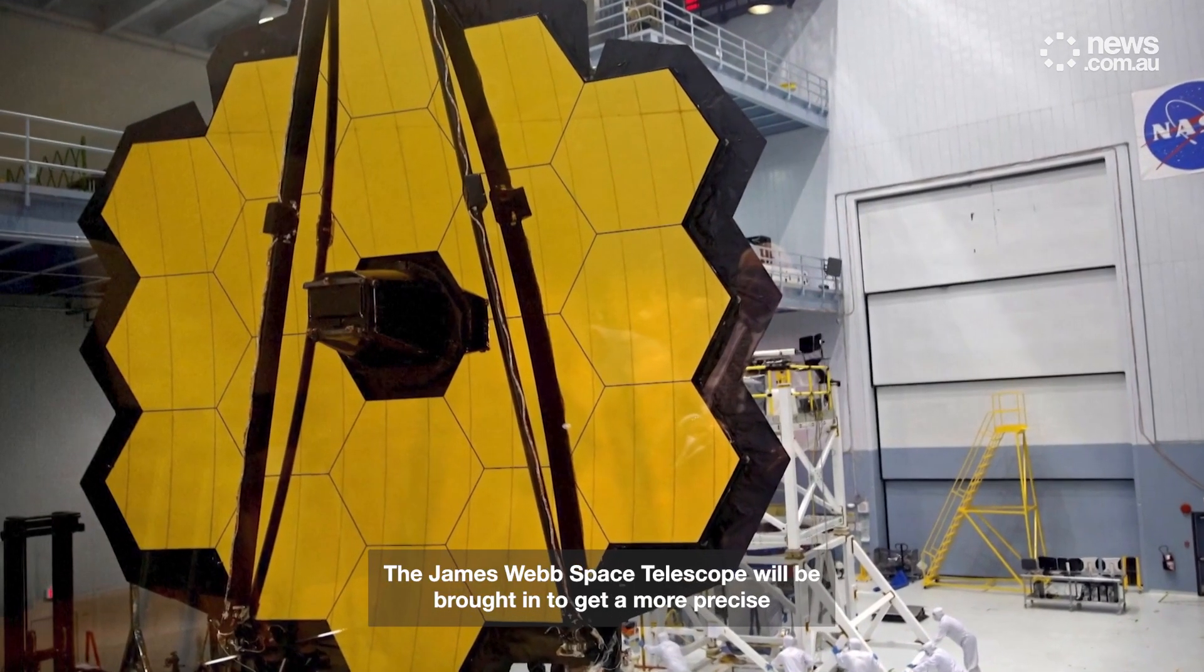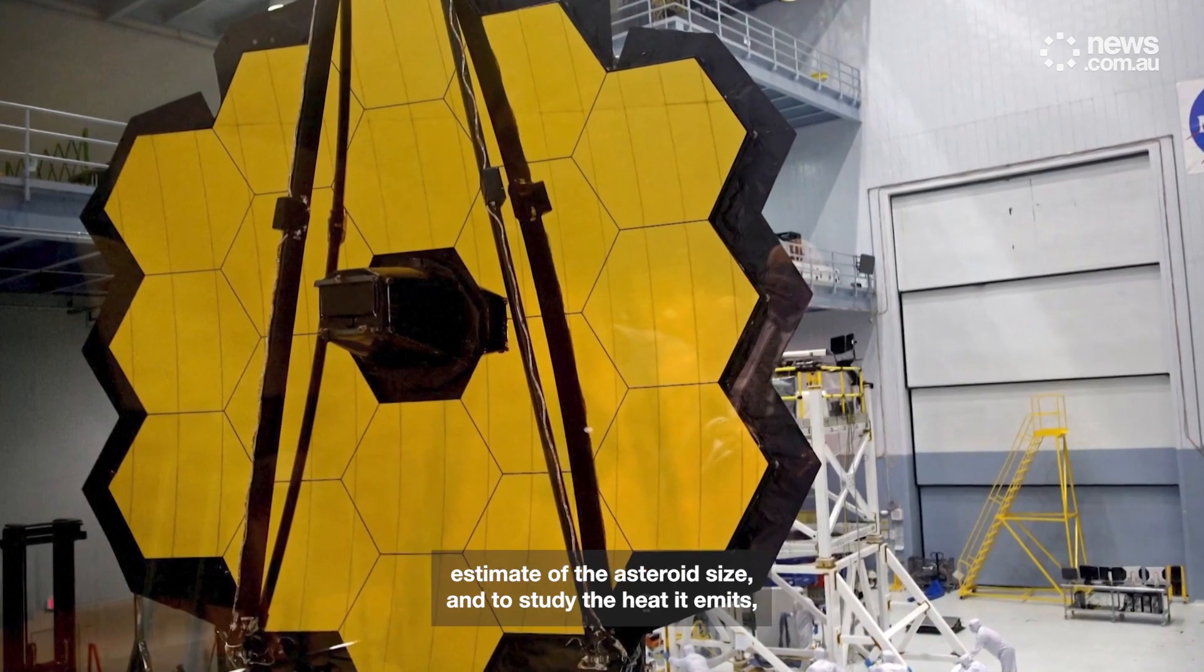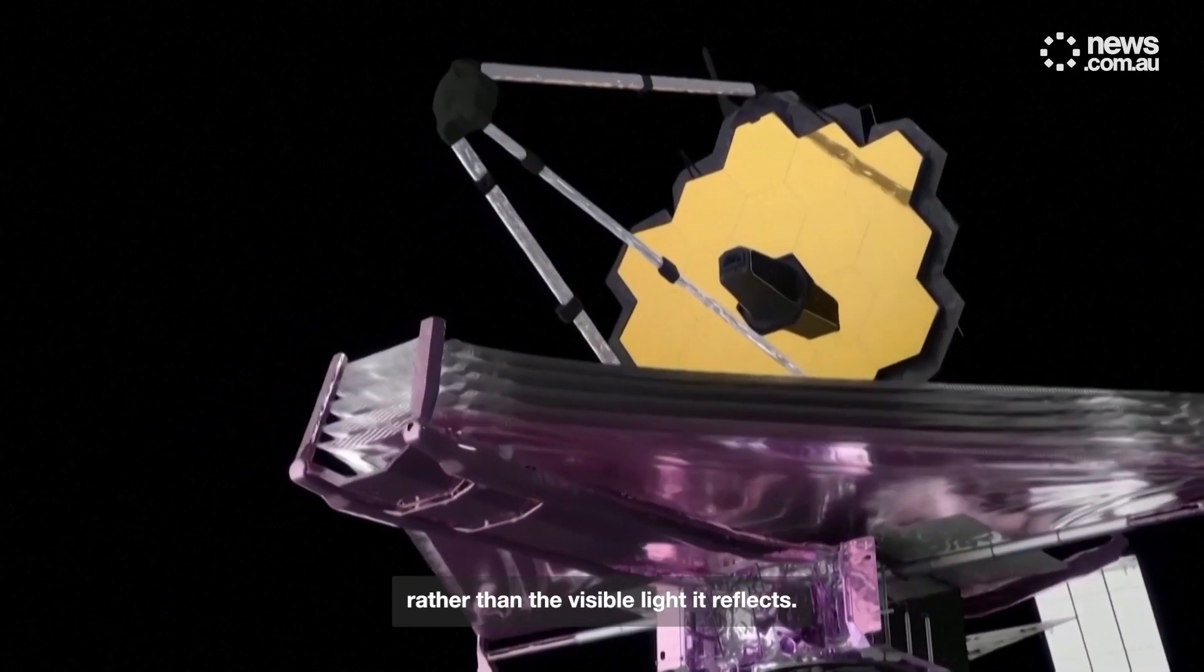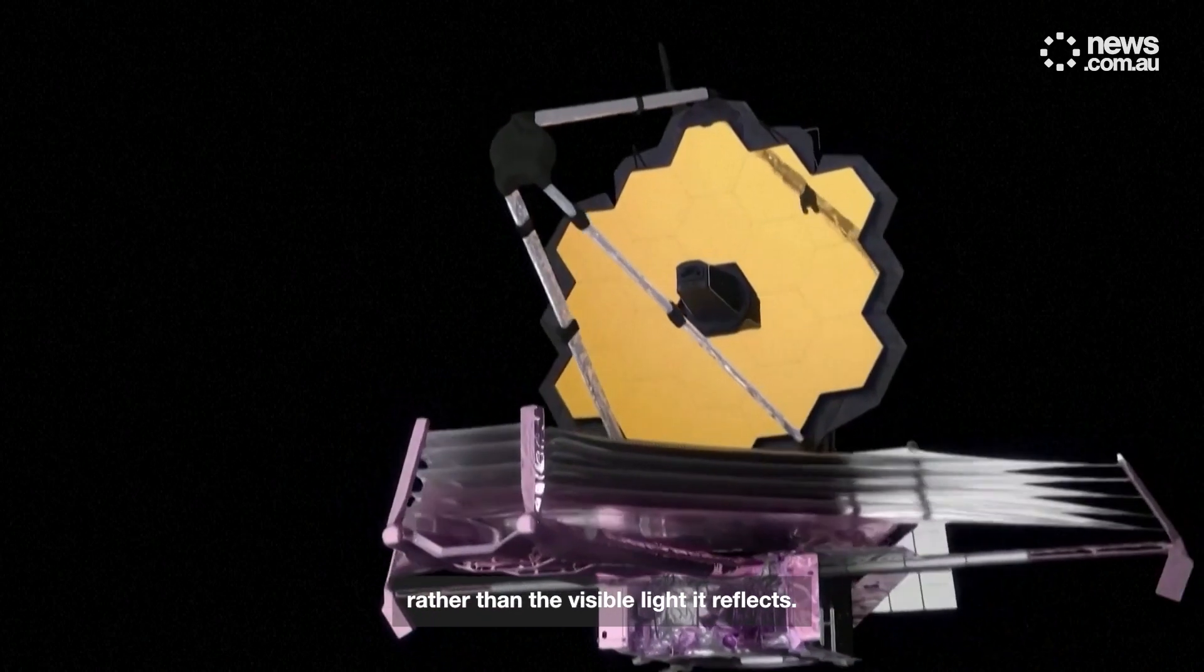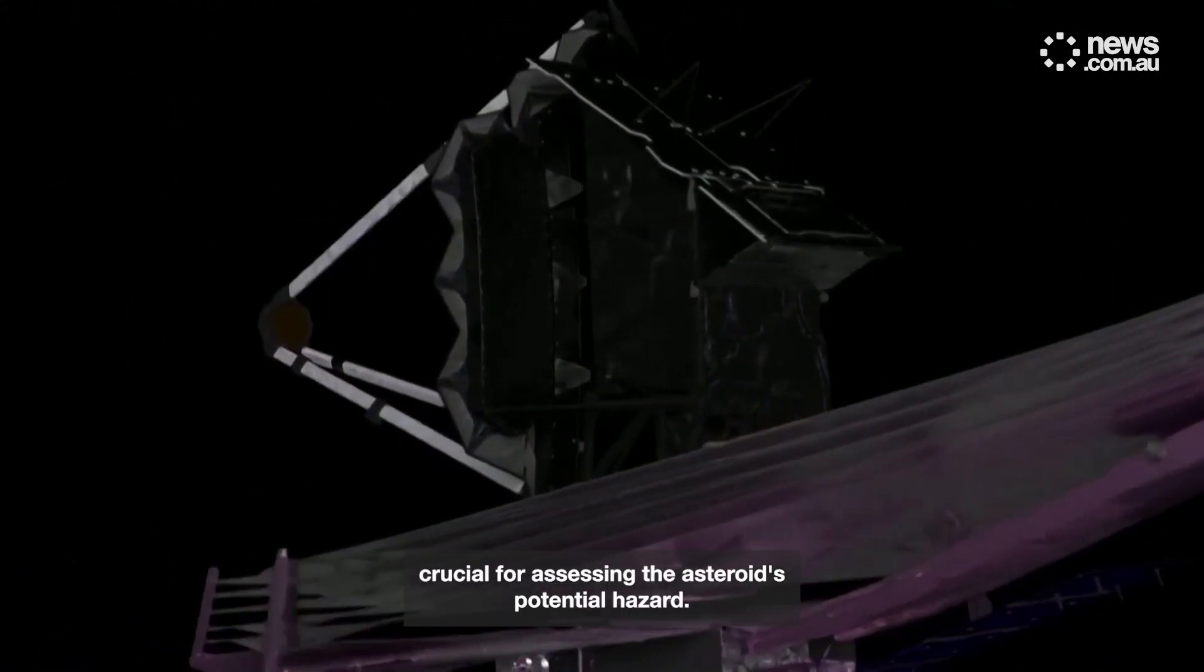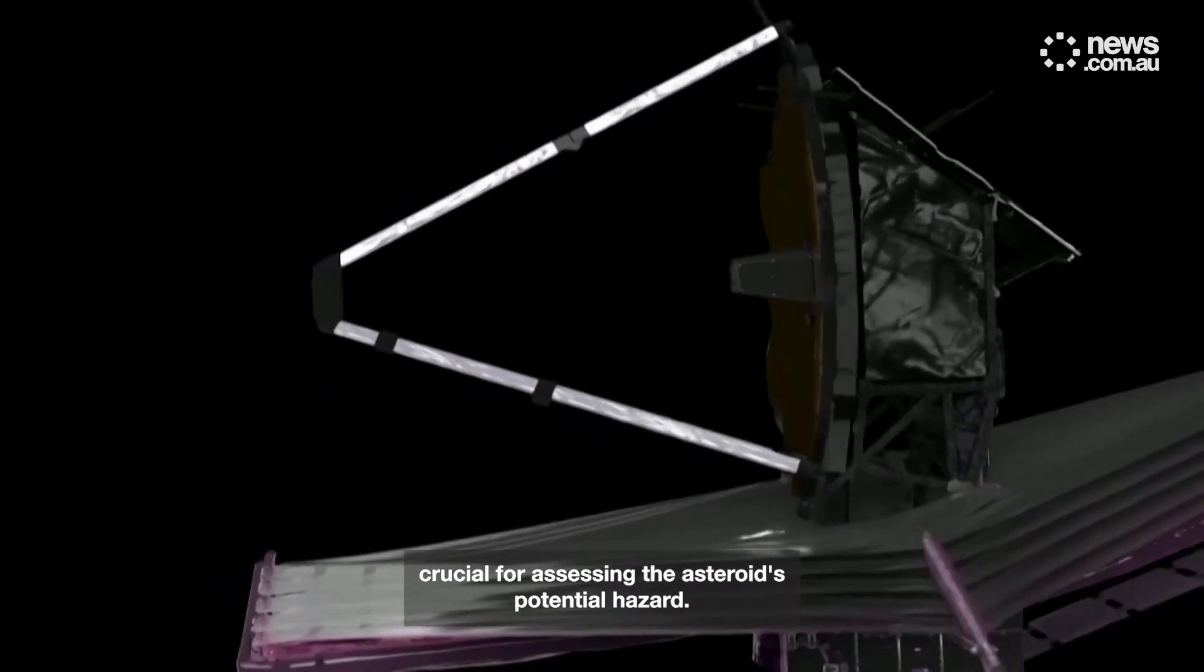The James Webb Space Telescope will be brought in to get a more precise estimate of the asteroid's size and to study the heat it emits, rather than the visible light it reflects. This method can provide a more accurate size estimation, crucial for assessing the asteroid's potential hazard.